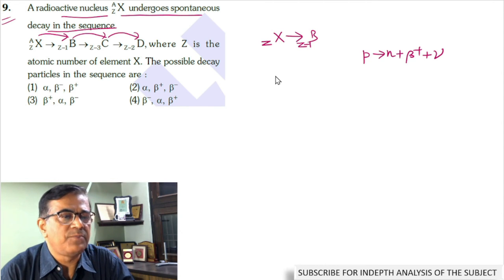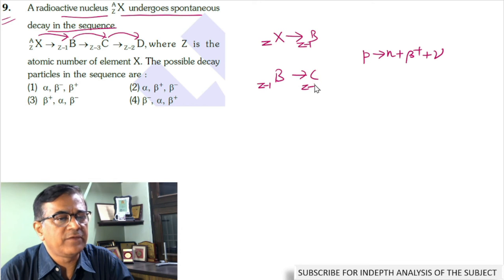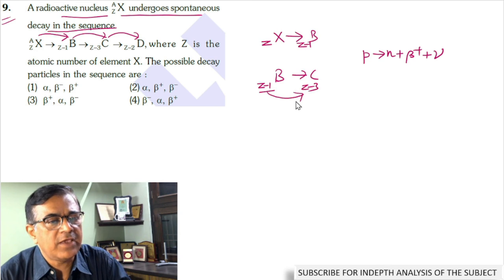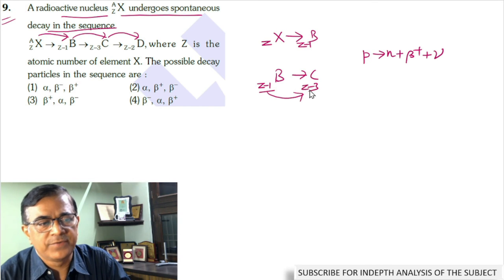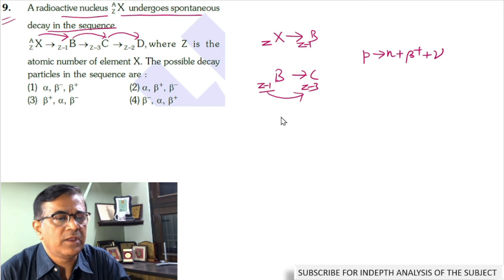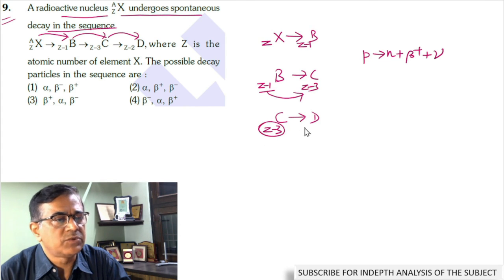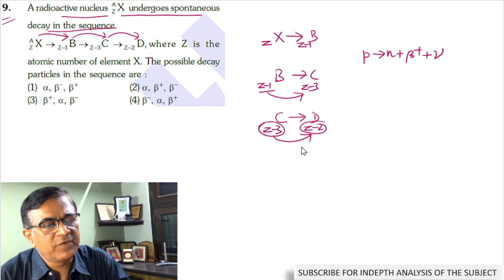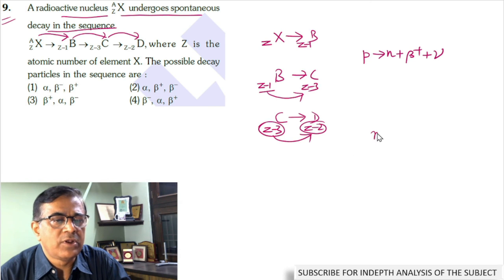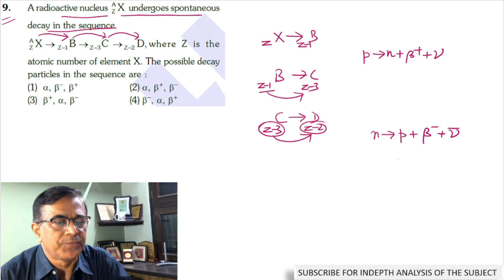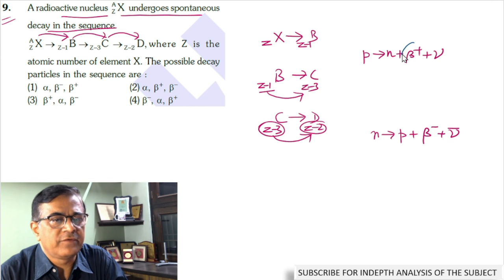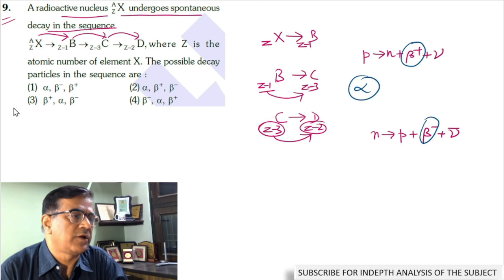During the transition from B to C, the atomic number changes from Z minus 1 to Z minus 3. The atomic number changes by 2, which is possible when an alpha particle is emitted. In the final transition from C to D, the atomic number changes to Z minus 2. Atomic number is increasing by 1, which is possible when a neutron changes to a proton by emitting a beta particle along with anti-neutrino. Hence, the sequence should be positron, alpha particle, then electron.